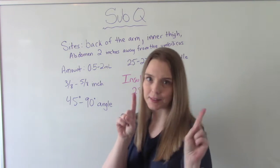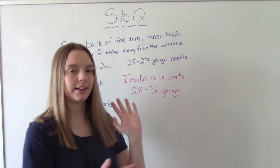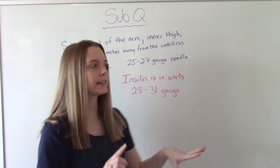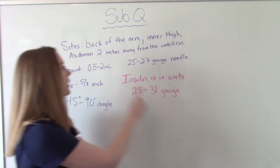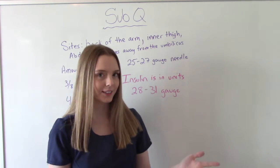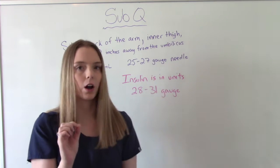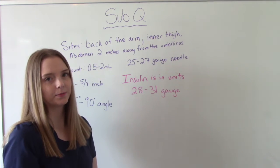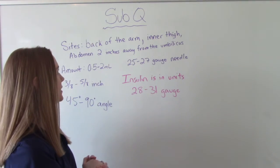Something special: one of the most common medications given subcutaneously is insulin. A couple of special things about insulin — insulin is given in units, not mLs. So that's going to be very dependent on the patient. And then the needle gauge we use is also a little bit smaller: 28 to 31 gauge. So that's just a little special thing about insulin when we give subcutaneous meds.